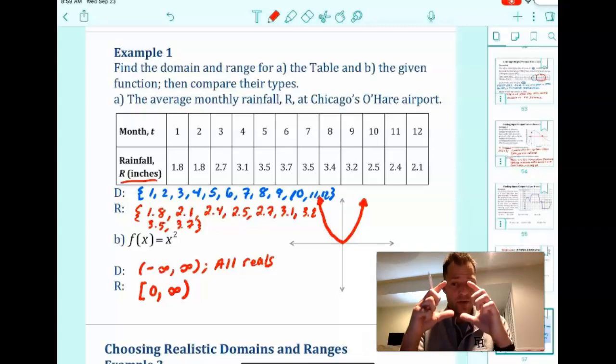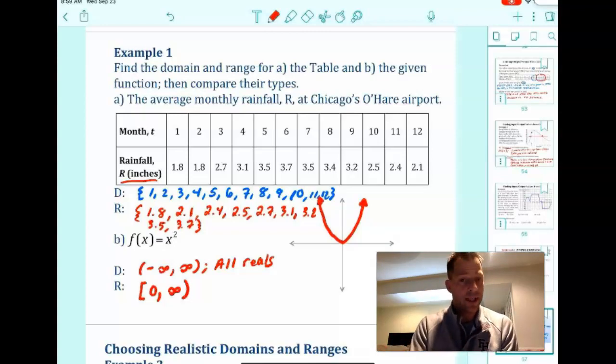Here, you can use brackets as well, because you can include zero. And remember that infinity or negative infinity always gets parentheses. So if you have any questions or comments, please let me know below. We'll see you next time.